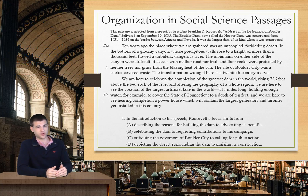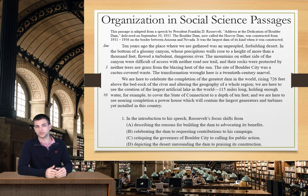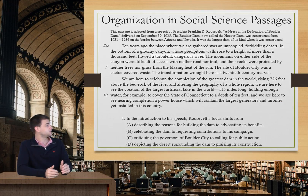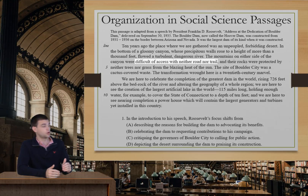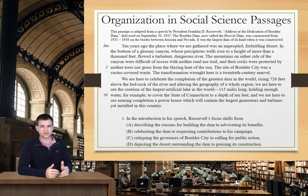So in the first paragraph, Roosevelt is describing the location of the dam. He's giving us some physical characteristics of the desert prior to the dam's construction. He's telling us that there was a gloomy canyon and a dangerous river. He also explains that there is no road or trail. And he's kind of giving us a negative view — the words gloomy and dangerous, and then he says difficult of access. Those phrases all give us a negative view.